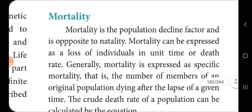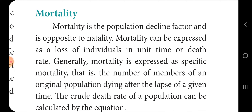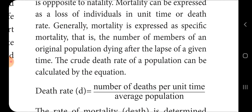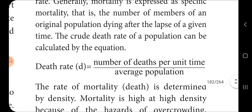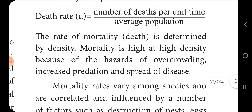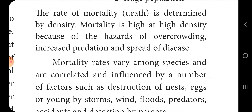Mortality is a population decline factor and is the opposite of natality. Mortality can be expressed as the loss of individuals per unit time at a given death rate. Generally, mortality is expressed as specific mortality — the number of members of an original population that die after the lapse of a given time. Crude death rate of a population can be calculated by the equation: death rate equals number of deaths per unit time divided by average population size. The rate of mortality is determined by density — mortality is high at high density.